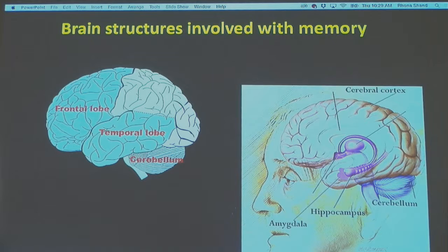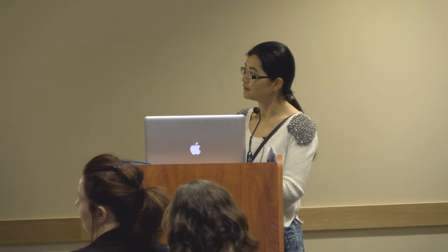Currently, we believe there are several brain structures mainly involved in memory formation, as shown in this picture. The cerebral cortex can be divided into four sections, and two of those are essential for memory formation: the frontal lobe and the temporal lobe. Inside the temporal lobe, we'll focus on two structures — the hippocampus and the amygdala. Another structure related to memory formation is the cerebellum. We'll cover all five structures in more detail on the next slide.